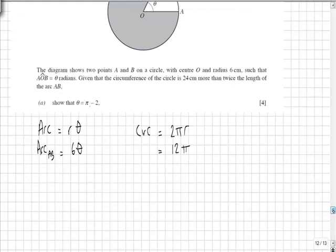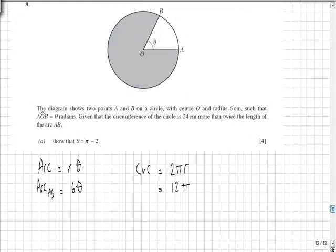Now, the wording of this question does cause confusion. Essentially, what it's saying is that if we multiply the arc length by 2 and add 24, we then have the same expression as the circumference of the whole circle.